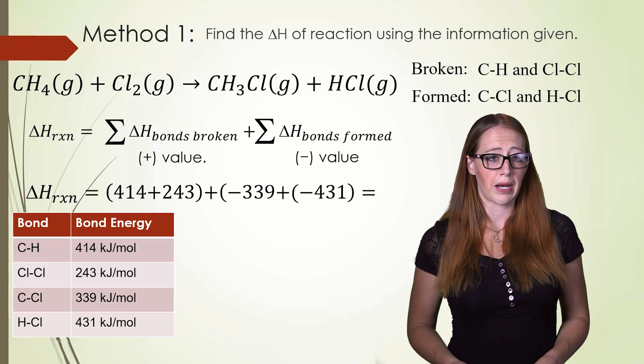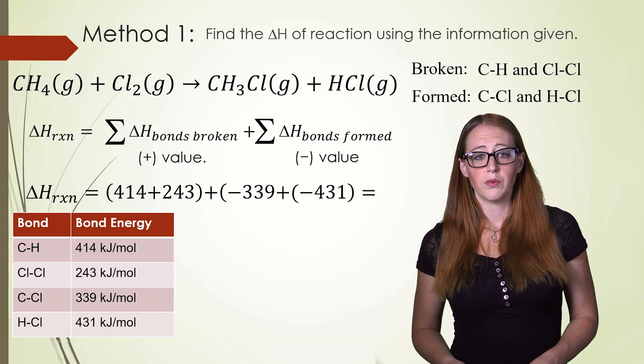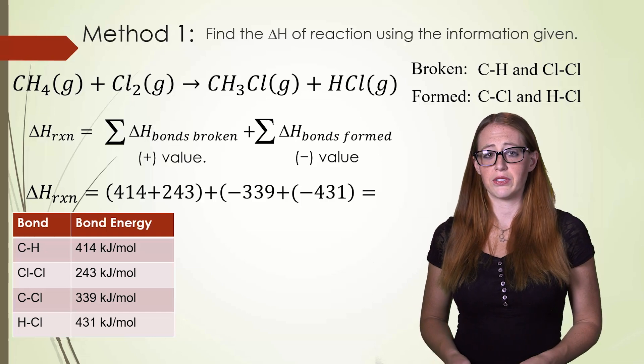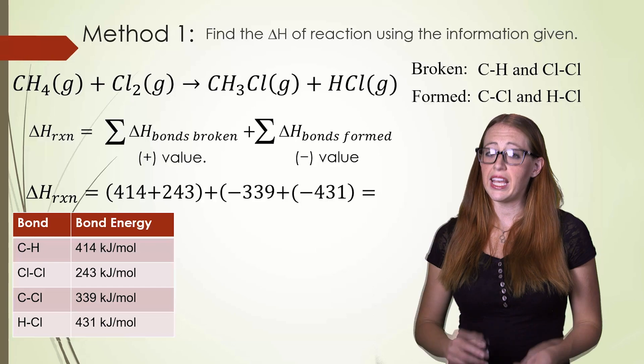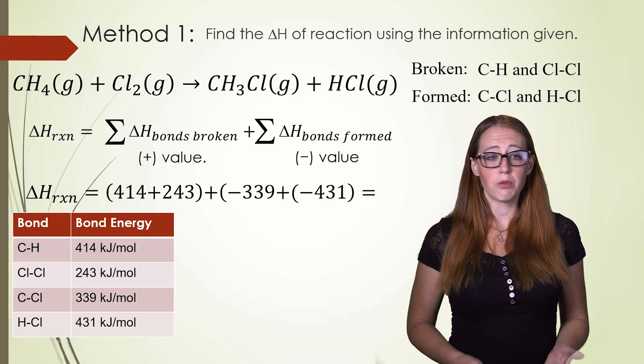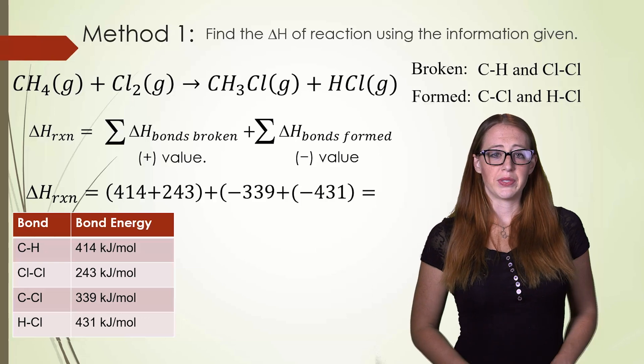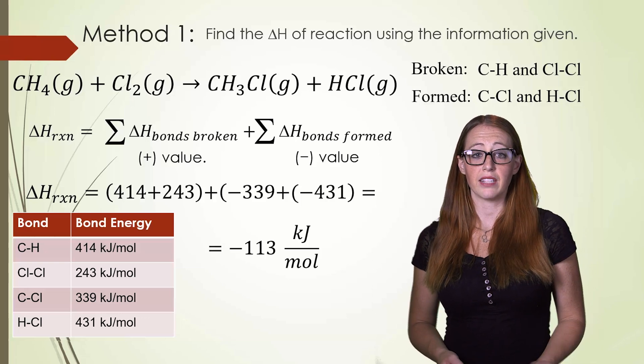When we do this we get the following values. We fill in the values for the bonds broken, 414 and 243. We fill in the values for the bonds formed which is negative 339 and negative 431. Notice we had to make those negative. The table is always going to list them as positive. Now it's just a matter of doing the math and we get negative 113 kilojoules per mole and this is our answer.